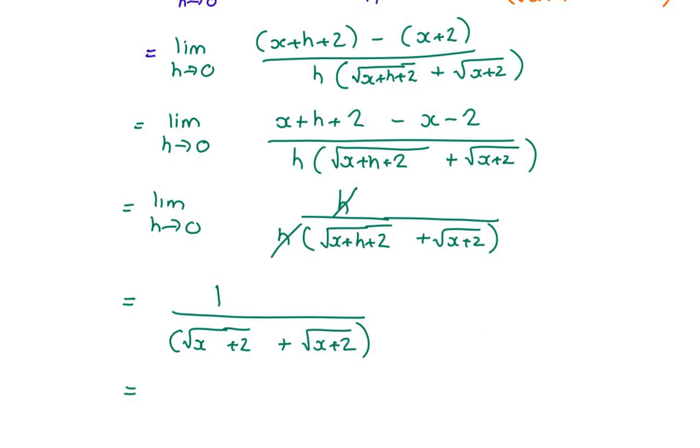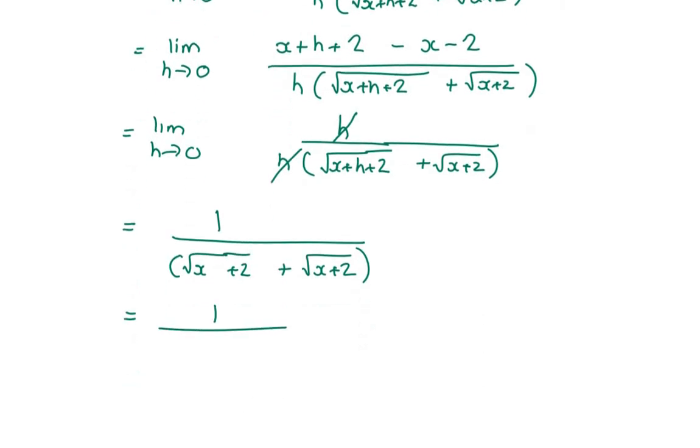All I need is for me to create an h by itself at the top. And then it can cancel with the h at the bottom. Now I get x plus h plus 2 and minus x minus 2. That entire top is going to cancel except for h, which is perfect for us. The moment my h's cancel, you can find the limit as h tends to 0. And I get 1 over 2 times root x plus 2.